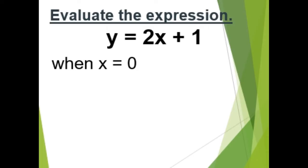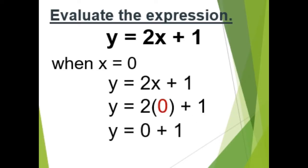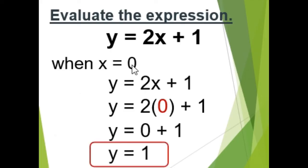We have the same expression y equals 2x plus 1. But what if the value of x is 0? Substituting 0: 2 times 0 is 0, and 0 plus 1 is 1. So if the value of x is 0, then y is 1.